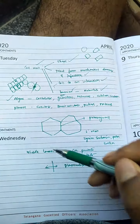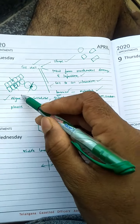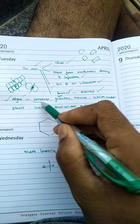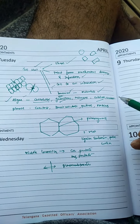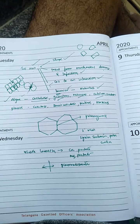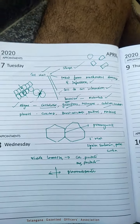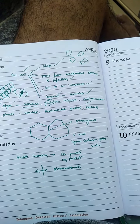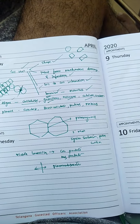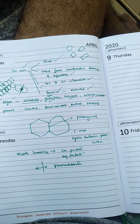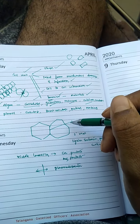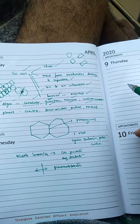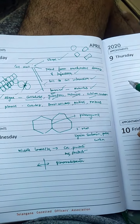Now, looking at algal members, their cell walls mainly contain cellulose, galactans, mannans, and calcium carbonate. In chrysophytes, silica is present. In chlorophyceae members like Chlorella, cellulose is present. In phaeophyceae, mannans are present, and galactans are present in their cell walls.